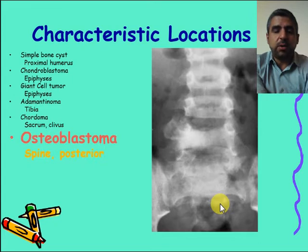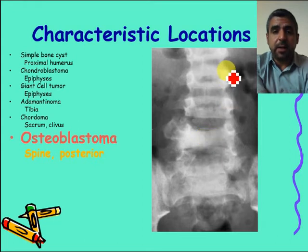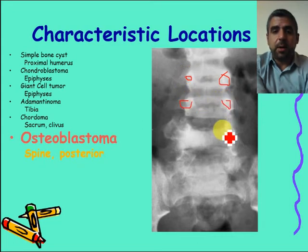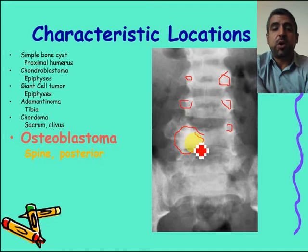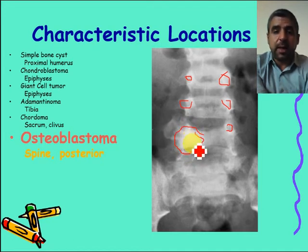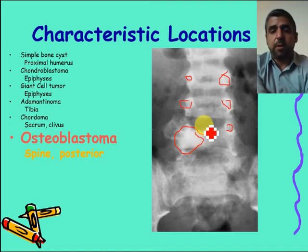Regarding osteoblastoma, it occurs in the spine in the posterior elements. You can see pedicles at adjacent levels, but at one level a pedicle is missing, replaced by a sclerotic osteoblastic lesion — indicating an osteoblastoma at a characteristic location in a younger age group.